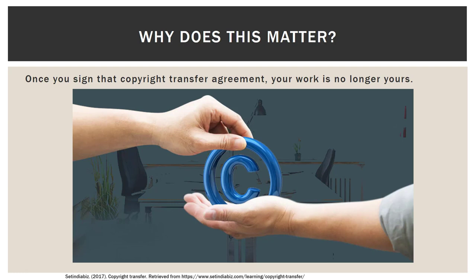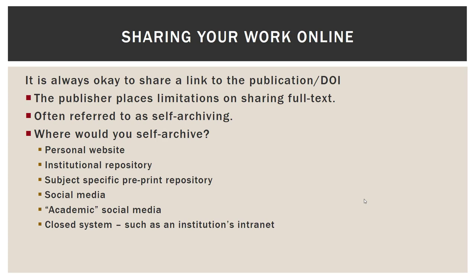Why does it matter? Once you sign that copyright transfer — whatever the document is actually called — once you sign it, the work is no longer yours. It now belongs to the publisher. So the six rights of copyright — reproduction, distribution, derivative works, public performance, public display, digital audio transmission — those six rights that were yours when you created your piece of work now belong to the publisher. This greatly affects how you can share your work online. You can always share a link to the publication or the DOI — that's always fine. The publisher will place limitations on sharing full text. Sometimes instead of calling it author rights, this will be referred to as self-archiving somewhere on the publisher's website.